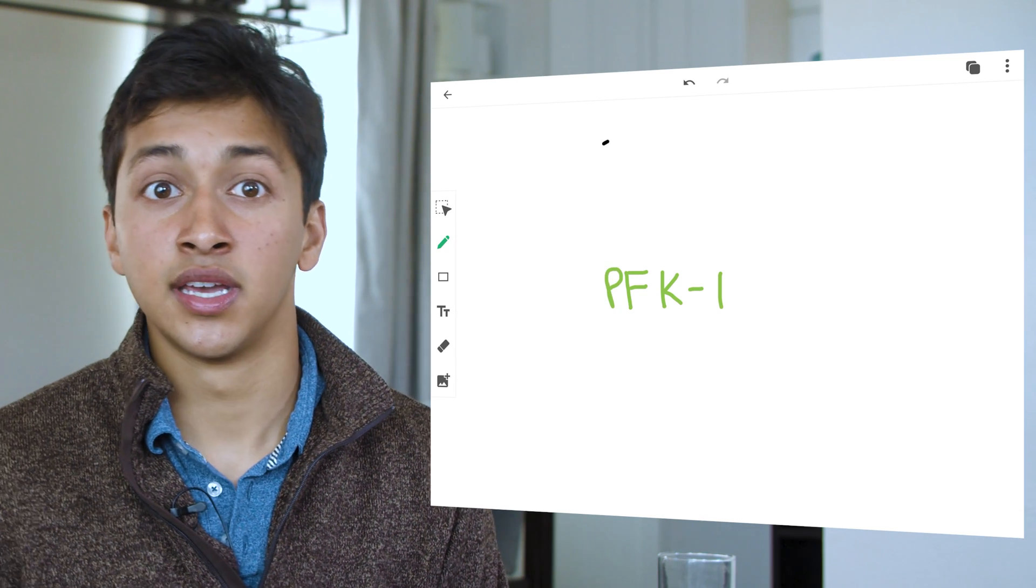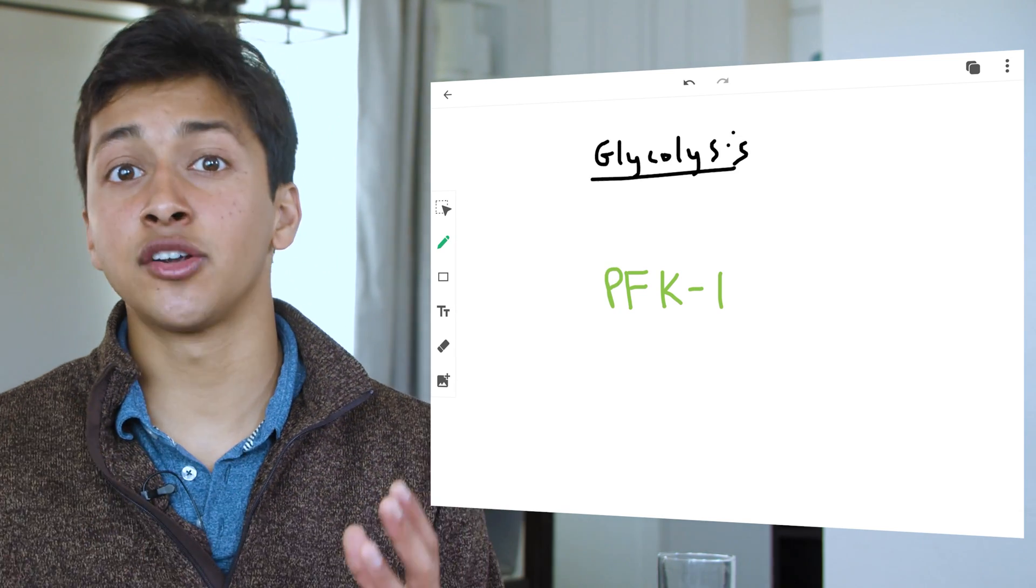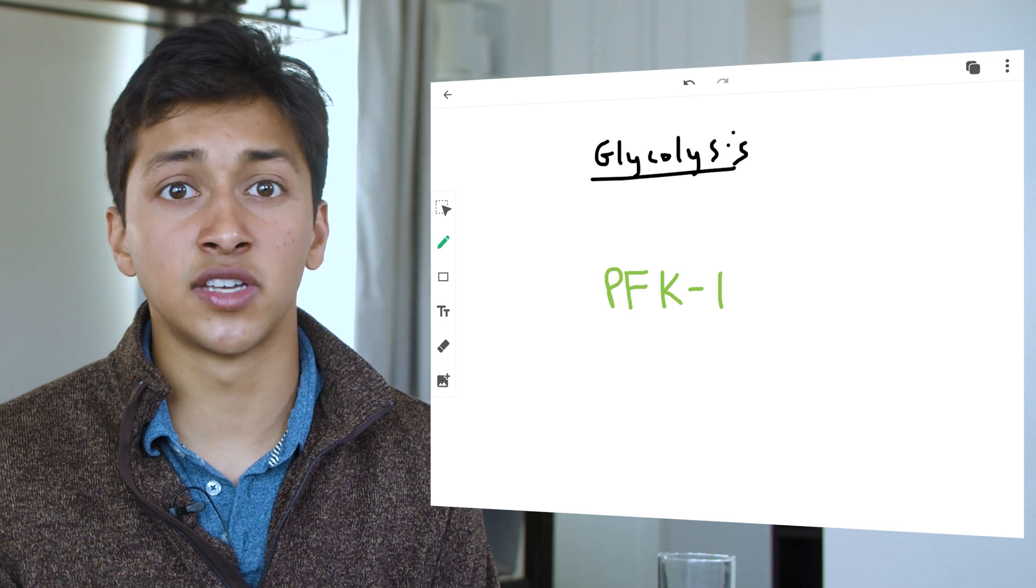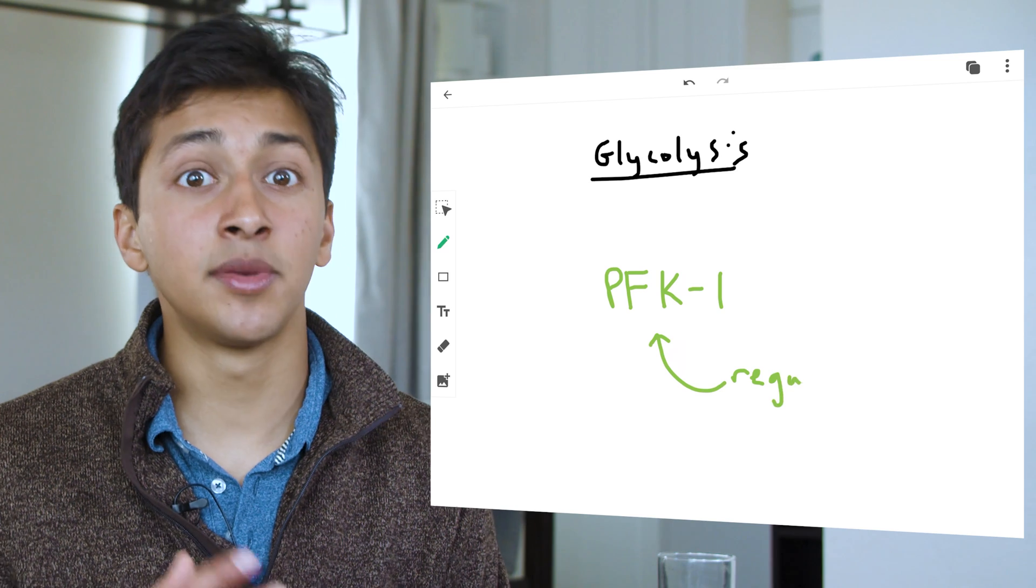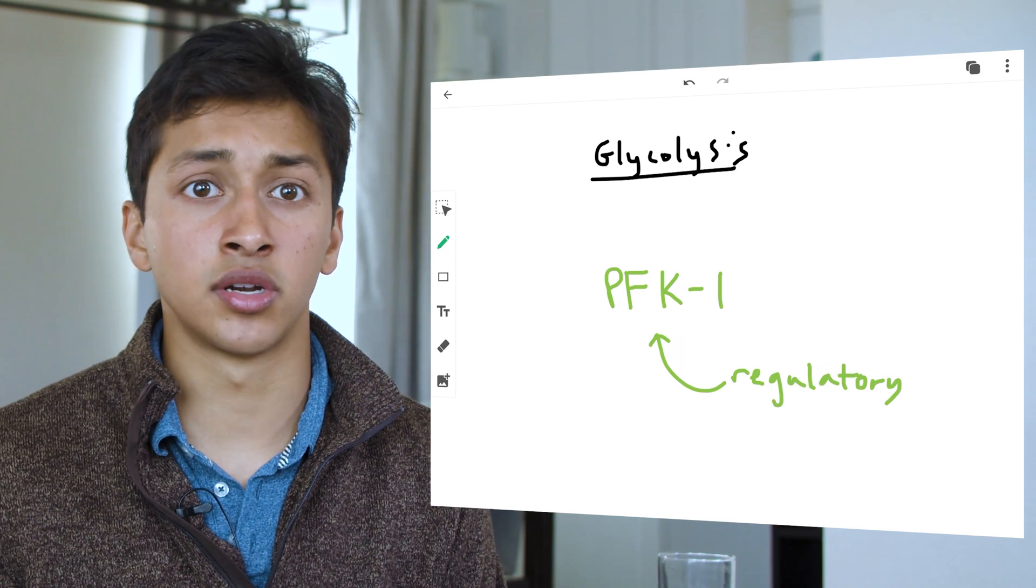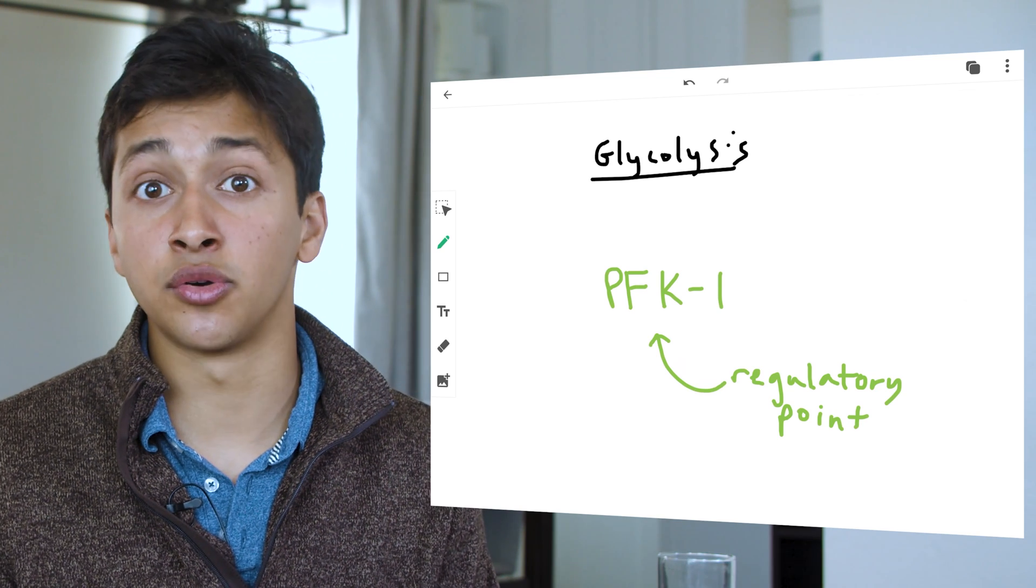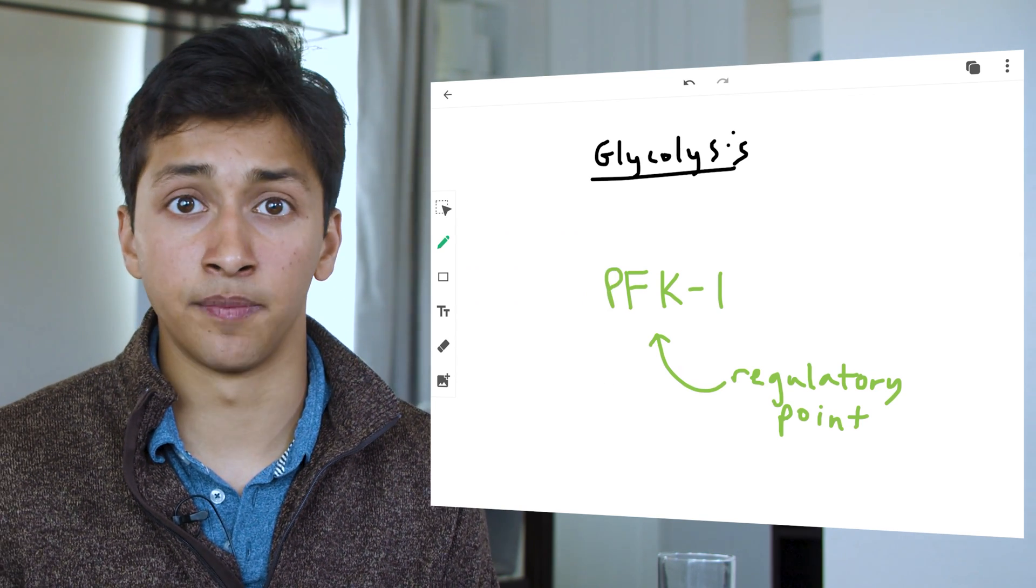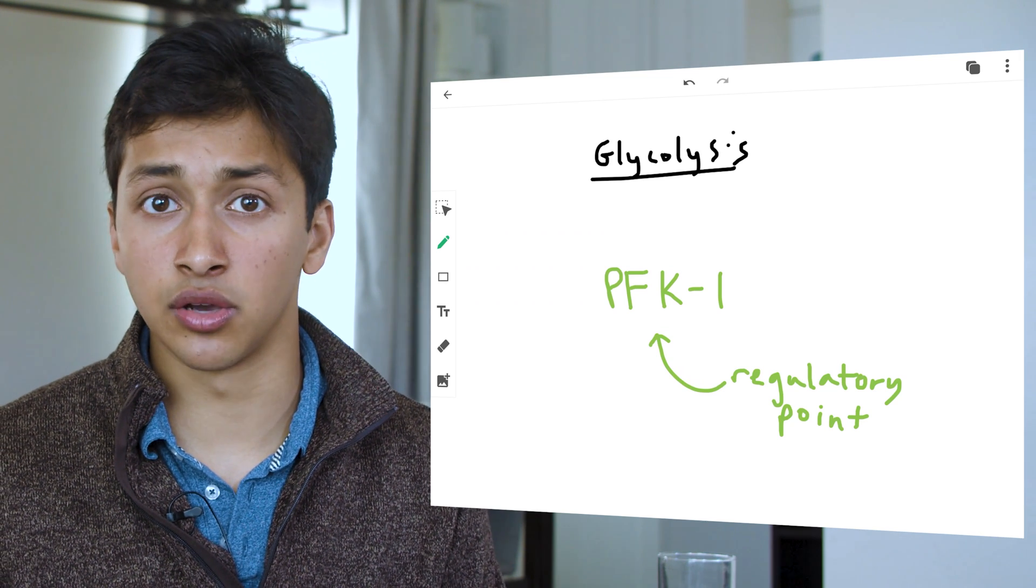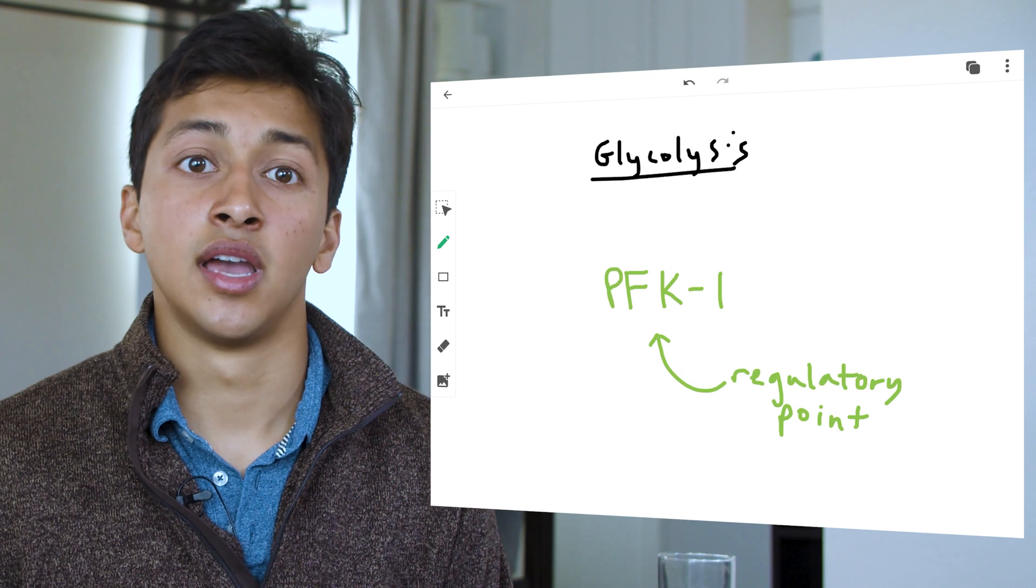Phosphofructokinase 1, or PFK1, is the rate limiting step of glycolysis. This means that the entire glycolysis pathway can only move as quickly as PFK1. Why does the body do this? Rate limiting steps are often very important regulatory points within metabolism and biological pathways in general. Let's say we eat a large meal and have a lot of glucose in our bloodstream. We want to process this glucose and either use it as immediate energy or store it for future use. In order to do this, we need to carry out glycolysis.